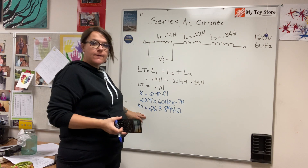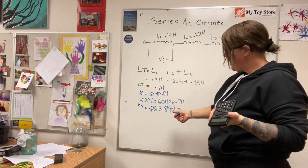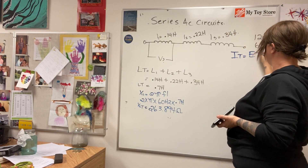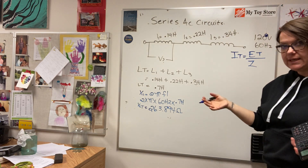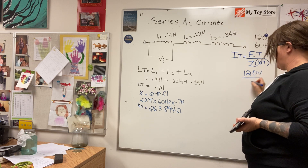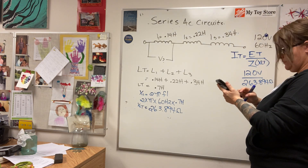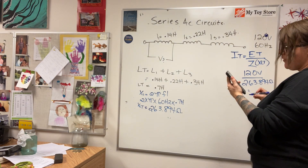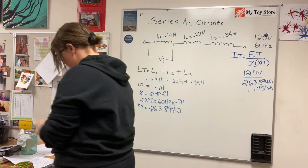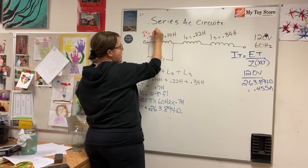Now I have XL total and I can find the current because they gave me the applied voltage. In a purely inductive circuit, XL total equals impedance Z, so I total equals E total over Z. Because it's purely inductive, Z equals XL total. So 120 volts divided by 263.894 ohms equals 0.455 amps. It's a series circuit, so that current is consistent throughout.